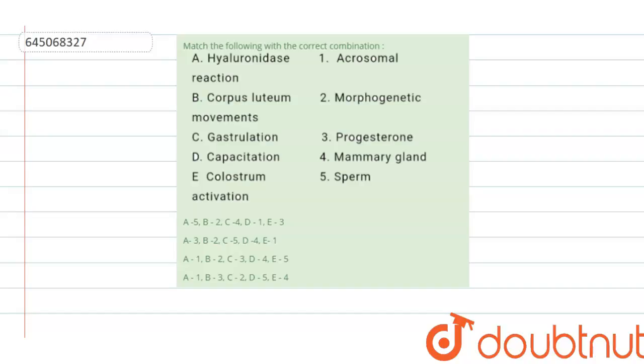Match the column with the correct combination. The terms in column one are hyaluronidase reaction, corpus luteum movements, gastrulation, capacitation, and colostrum activation. The terms in column two include acrosomal, morphogenetic, progesterone, mammary gland, and sperm.